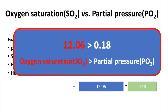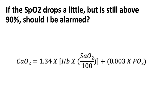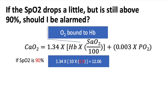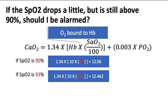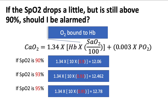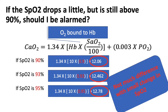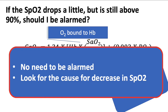If the SpO2 has dropped a little but is still above 90%, shall I be alarmed? If we look at the equation, the bound entity would be 0.90 if SpO2 is 90%, 0.93 if it's 93%, or 0.95 if it's 95%. Therefore, the total content of oxygen will not change very much with a small change in SpO2. As such, you should not be alarmed. However, you should be concerned because something has changed in the patient that led to the drop in SpO2, so you should calmly look for the cause.